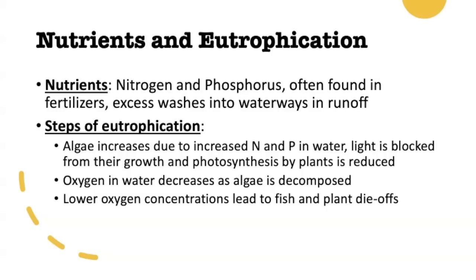This excess nutrient runoff can lead to eutrophication. The steps of eutrophication involve runoff carrying nutrients into a waterway, causing algae in the waterway to increase dramatically. The problem is that algae multiplying in water will block sunlight, preventing plants deeper in the water from photosynthesizing. Algae are small organisms that don't live very long, so they die in large quantities. When they decompose, they use up dissolved oxygen out of the water. As oxygen levels lower and become what we call hypoxic — or lacking in oxygen — we see fish and plant die-offs as a result.